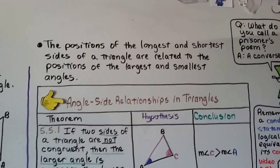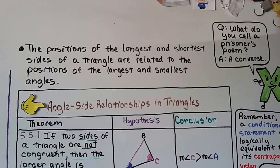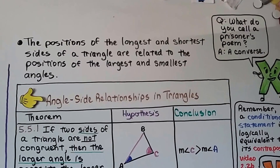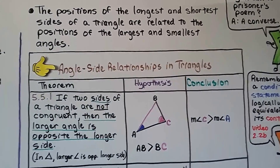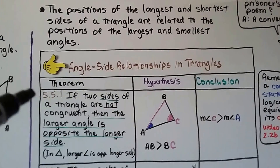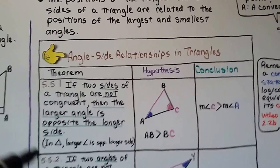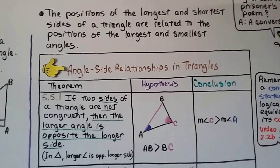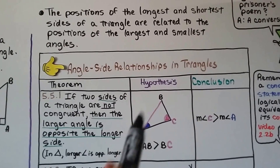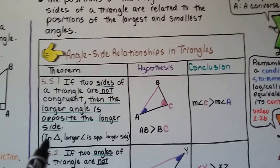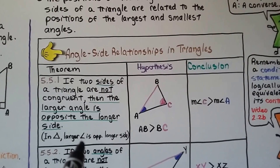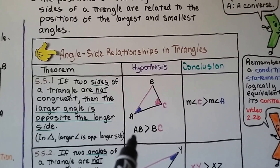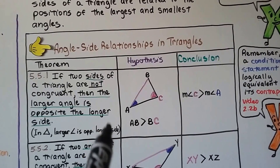The positions of the longest and shortest sides of a triangle are related to the positions of the largest and smallest angles. Here's the angle-side relationships theorem in triangles — theorems 5.5.1 and 5.5.2. Theorem 5.5.1 says if two sides of a triangle are not congruent, then the larger angle is opposite the longer side. In a proof, we write: in triangle, larger angle is opposite longer side. So AB is greater than BC, and the measure of angle C is greater than the measure of angle A.